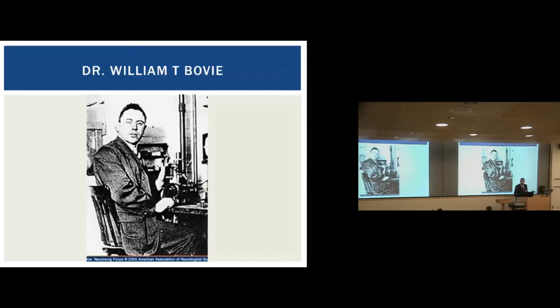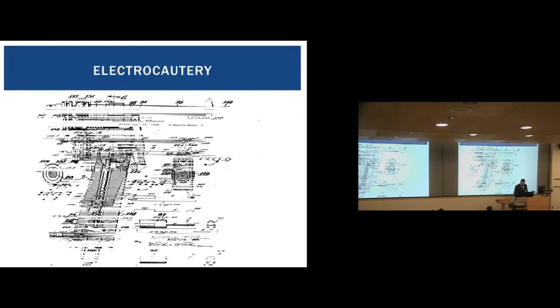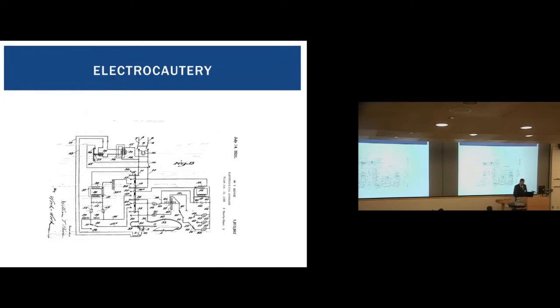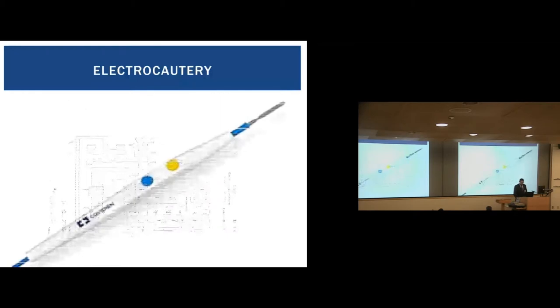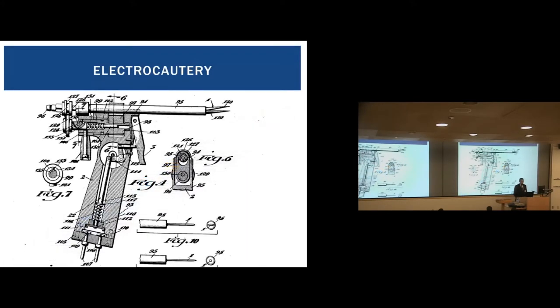Prior to Bovey's work, it had been learned that above a certain frequency, electricity would flow through living tissue without creating generalized muscle contractions, but would cause local heating at the point of entry. Indeed, five years before Bovey's patent, in 1926, a patent was granted to William Bierman of New York City for a primitive device that used heat to sever tissues. Although current cautery devices often trace back to this 1926 patent, Bierman has been lost to history.